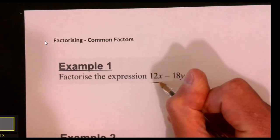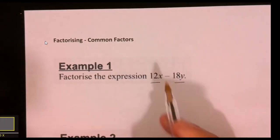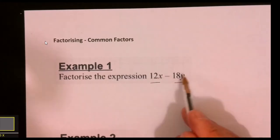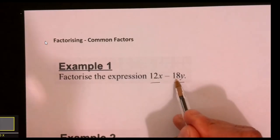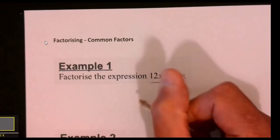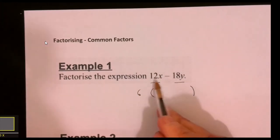If I look at the numbers first, what goes into 12 and goes into 18? I want the highest common factor. The highest common factor is 6, so that's going to go outside the bracket. I'm also going to look at the letters to see if there's anything in common.